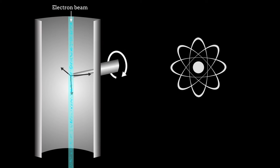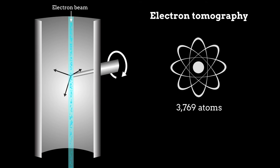In this study, scientists have taken a significant step toward meeting Feynman's challenge by using a technique called electron tomography to map the locations of 3,769 atoms in a needle made of tungsten.